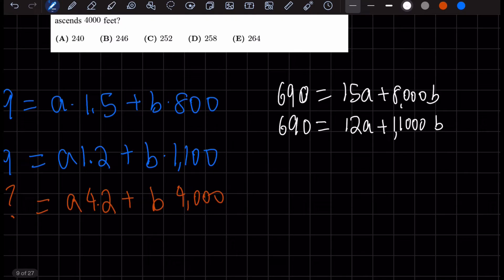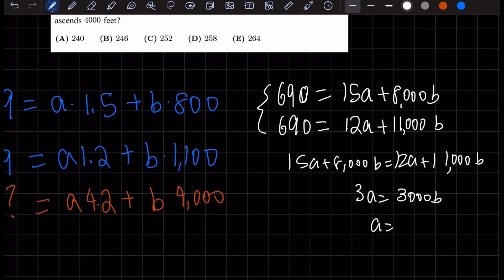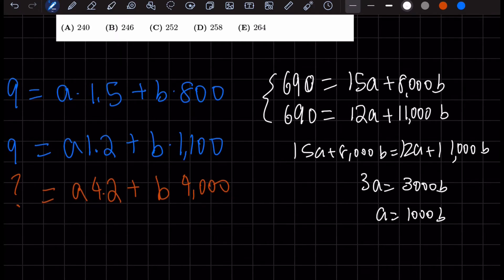What if we decide to equate these two equations? So 15A plus 8,000B equals 12A plus 11,000B. This will get us 3A equals 3,000B, and A equals 1,000B.